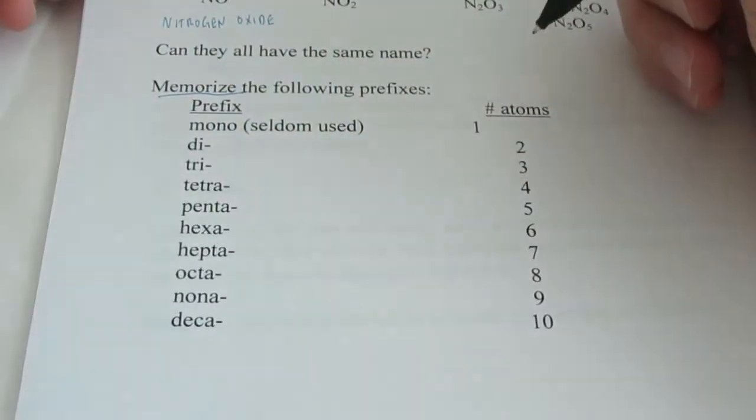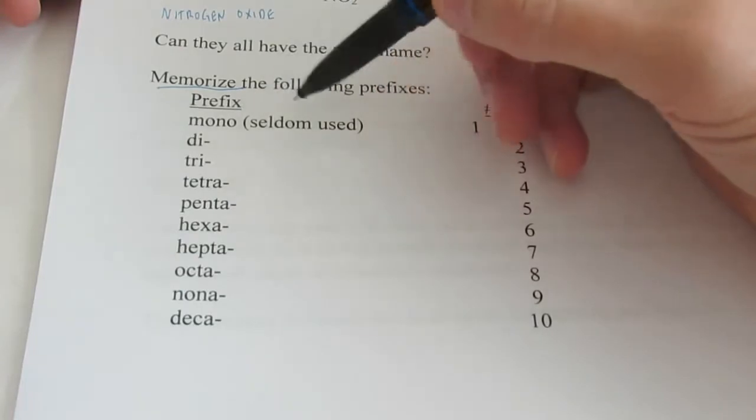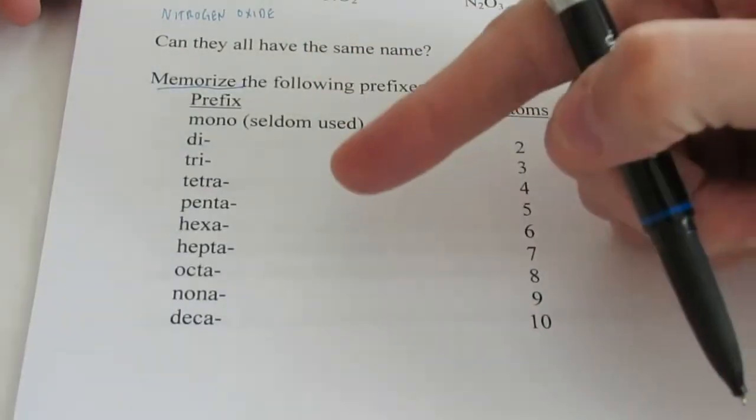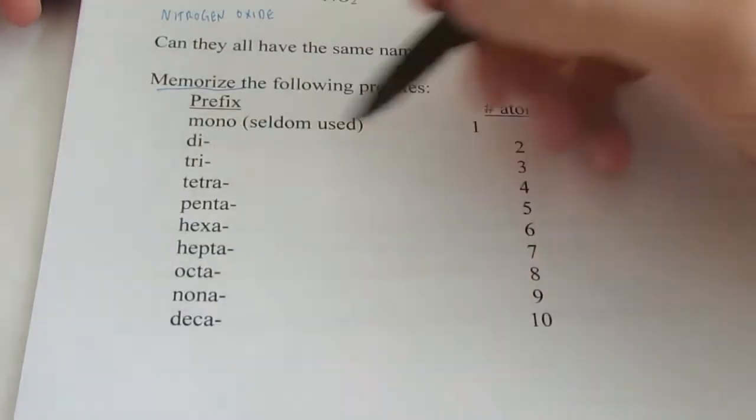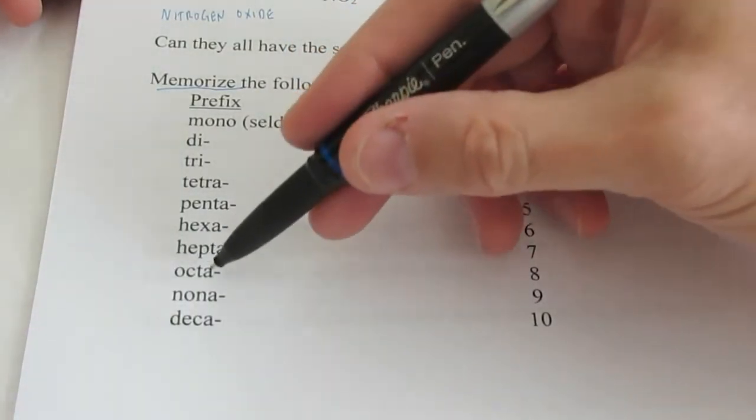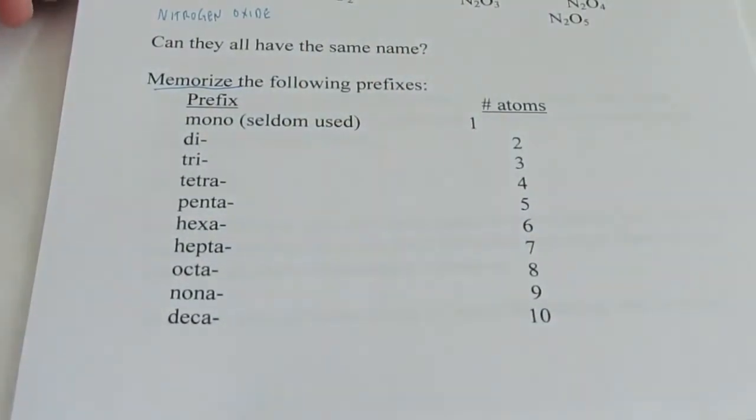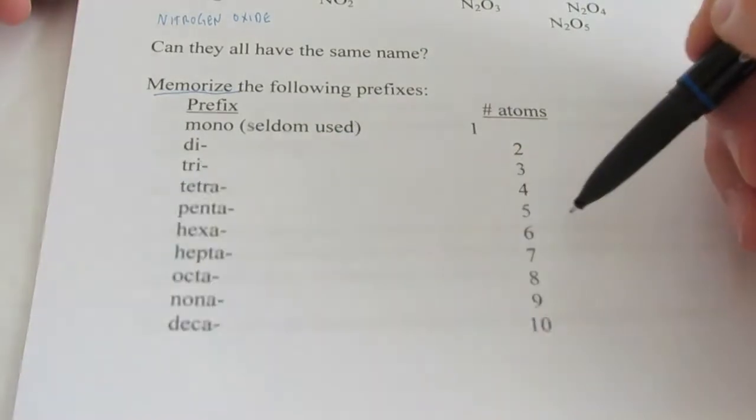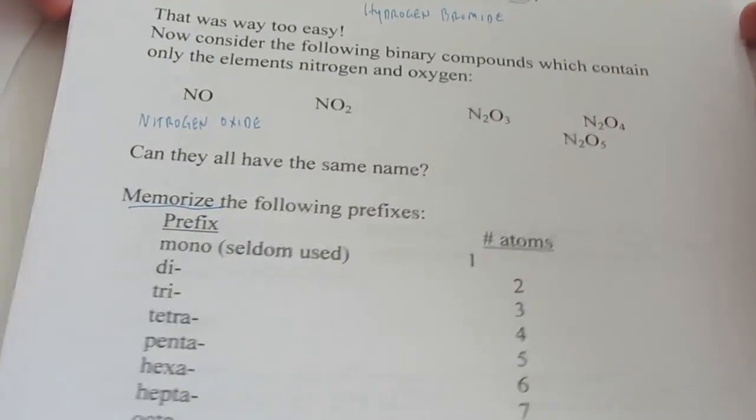Now these are Greek prefixes numbered one through ten. Now the first prefix we actually don't use very often. It's mono. It means you have one of those atoms. Di means you have two, tri three, tetra four, penta five, hexa, hepta, octa, nana, and deka. You need to remember what those prefixes mean. And we use those prefixes when we name binary covalent compounds.